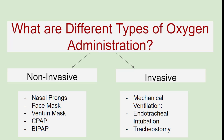What are the different types of oxygen administration? It is non-invasive and invasive. The non-invasive method of oxygen administration includes nasal prongs, face mask, venturi mask, CPAP and BiPAP. The invasive method of oxygen administration includes mechanical ventilation, which includes endotracheal intubation and tracheostomy.